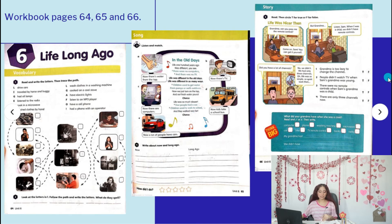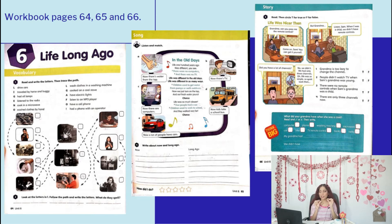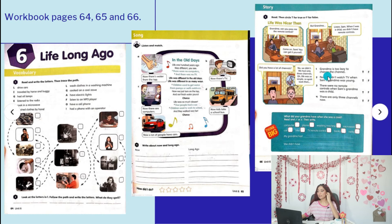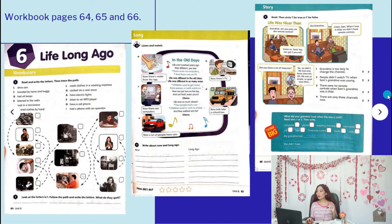On the last page, page 66, Activity 5 says: 'Read, then circle T for true or F for false.' The story is called 'Life Was Nicer Then,' a slightly shorter version. Read and circle: number 1 — Grandma is too lazy to change the channel, true or false? Number 2 — People didn't watch TV when Sam's grandma was young, true or false? Number 3 — There were no remote controls when Sam's grandma was a child, true or false? Number 4 — There are only three channels now, true or false?